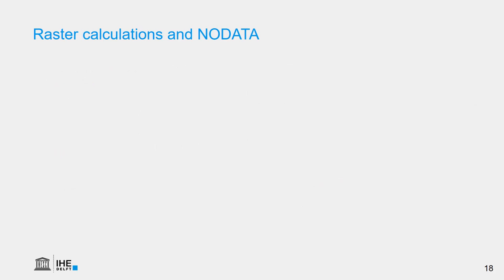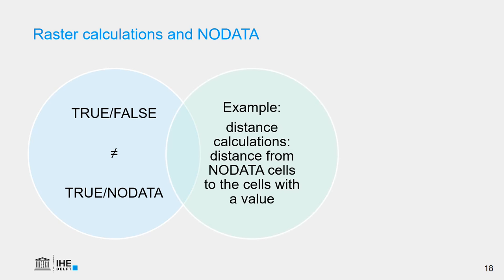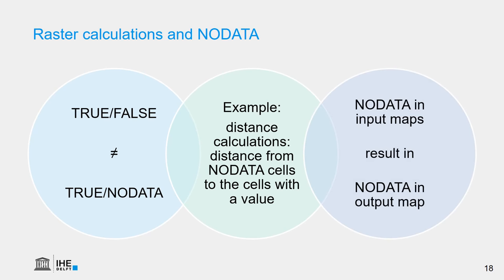We have to pay special attention to no data in map algebra. If we use Boolean maps with 1 for true and 0 for false, it is different than using 1 for true and no data for false. For some calculations, such as distance calculations, the distance will be calculated from all no-data cells to data cells. Since 0 is considered as data, the result may not be what you want. In that case, you need to convert zeros to no data, so distances are calculated from no-data cells to the 1 pixels. Remember that no data in any input map will always result in no data in the output map.